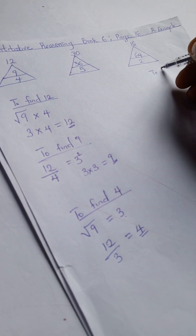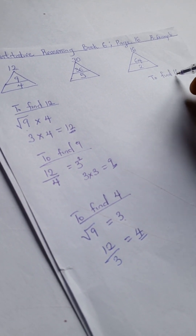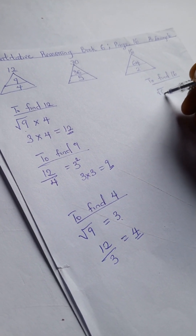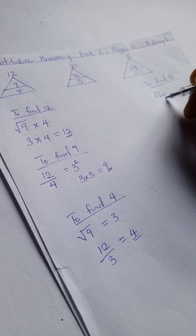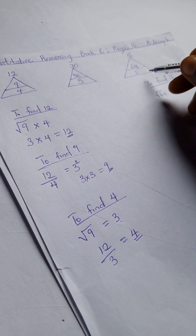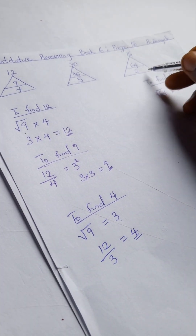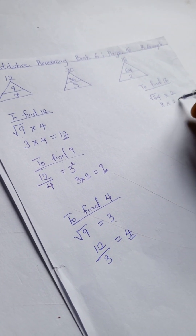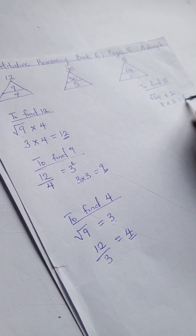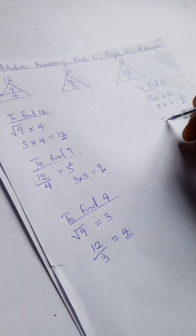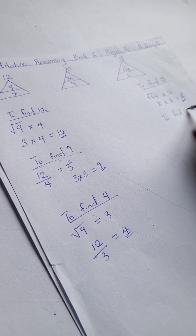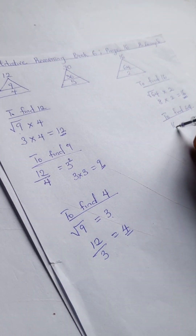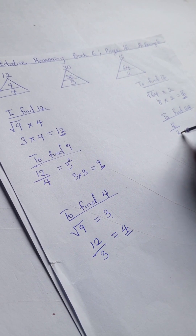Now let's look at the next example. To find 16, we take the square root of 64 times 2. The square root of 64 is 8, and 8 times 2 is 16. To find 64, we have 16 divided by 2, which is 8.